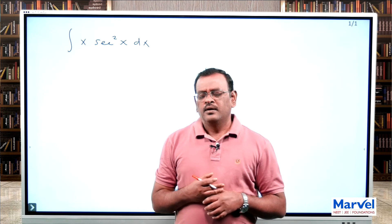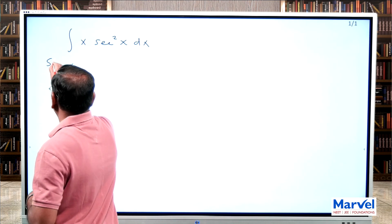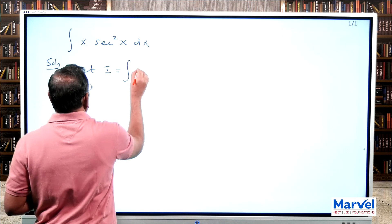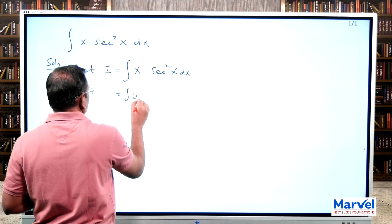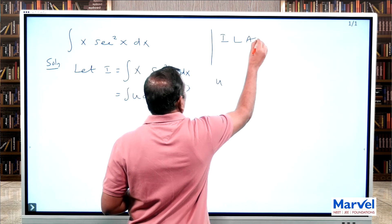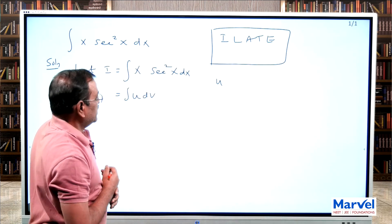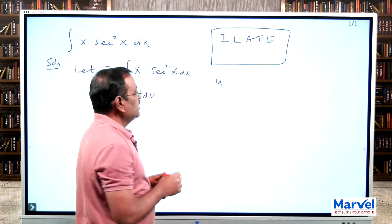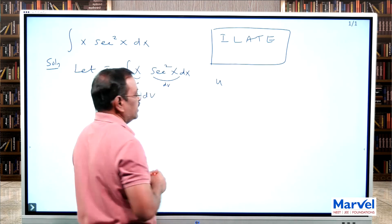So, what is integration by parts and how to apply it? We can write this as: let I equal to integral of x into secant square x dx, which is equal to integral of u dv. As per the ILATE rule, x is an algebraic function and secant square x is a trigonometric function. Therefore, this is u and this is dv.